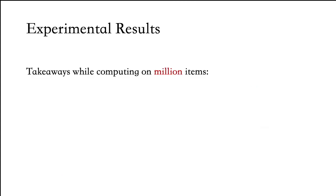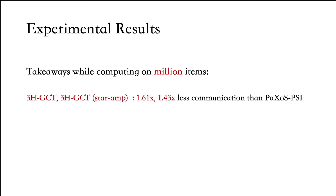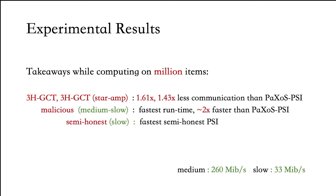Finally, I'd like to provide some takeaways from our experimental results. While computing the intersection on a million items, we saw that our constructions — the 3-hash garbled cuckoo table based on heuristic parameters and the one based on star amplification — had about 1.61× and 1.43× less communication than Paxos PSI respectively. This means that on slow and median networks we have the fastest malicious-secure PSI protocol, and on slow networks we have the fastest semi-honest PSI protocol. With that, I would like to thank you for your attention.